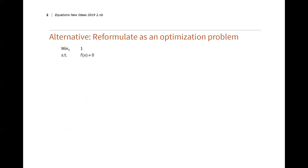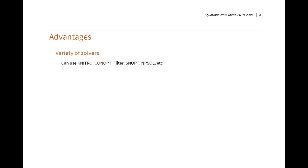Here's an alternative: write the equation-solving problem down as a constrained optimization problem. You want to minimize one, choosing an X that also solves f(X) = 0. This is a constrained optimization problem, and all the KKT conditions are satisfied. The best nonlinear equation solvers are buried in these nonlinear optimization codes — there's a variety: Nitro, CONOPT, Filter, SNopt, NPSOL, etc.